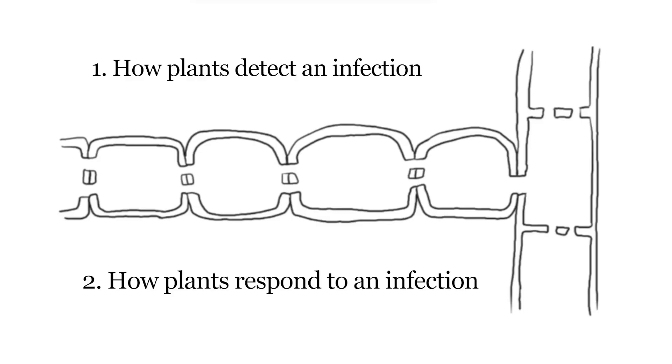We're going to look at this whole process at a cellular level - how individual cells respond and communicate during an infection. We'll focus on two major parts: number one, how does a plant detect an infection? And secondly, how do they respond to that infection and prevent its spread?